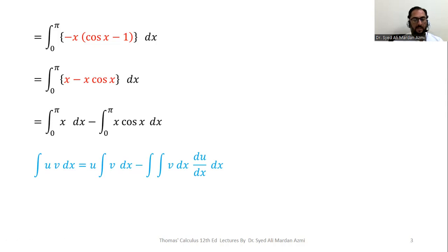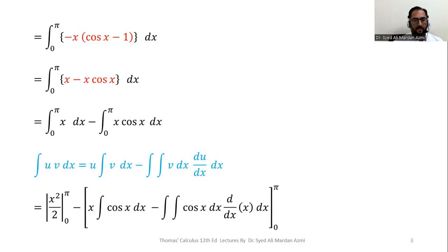In this case both x and cos x have formulas for integration and differentiation. We select u and v such that we can eliminate the sign of integration. So we select x as u and cos x as v, so that after taking the derivative we can get rid of the term x from the product. Integrating the first integral using the power formula: x raised to 1 plus 1 over 2 gives us x squared over 2, evaluated from 0 to pi.